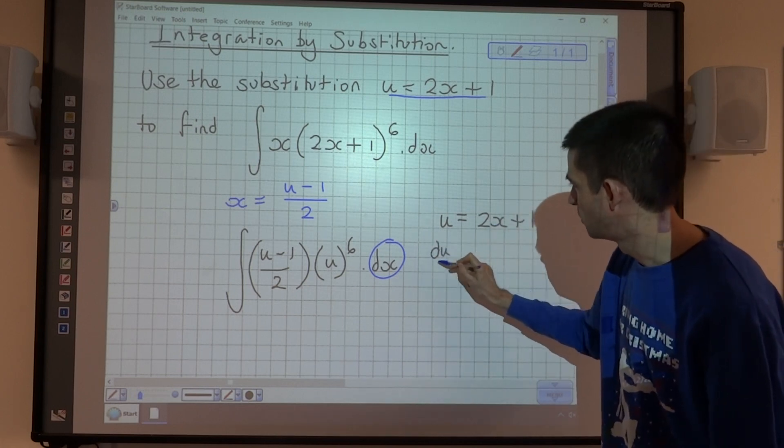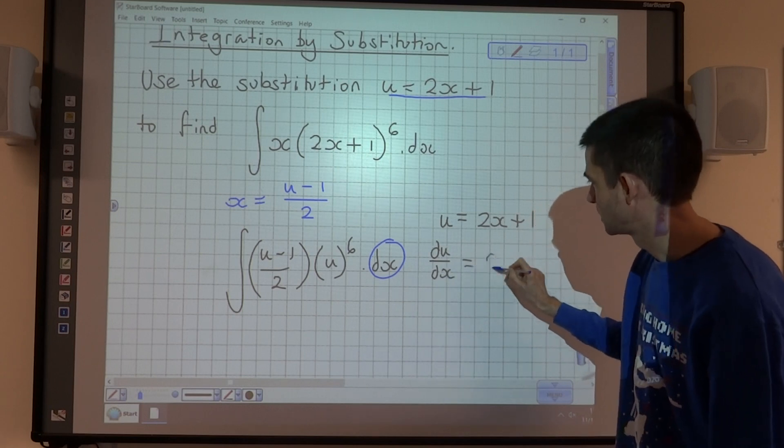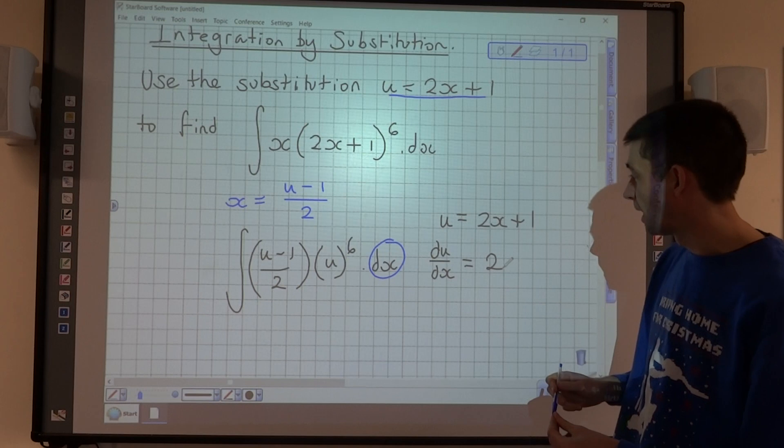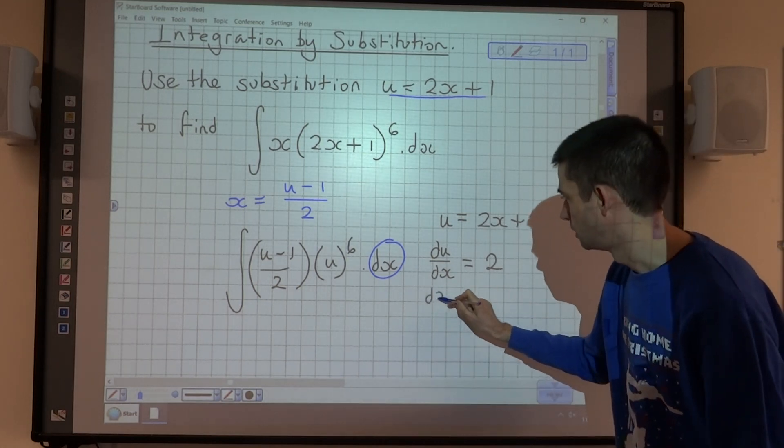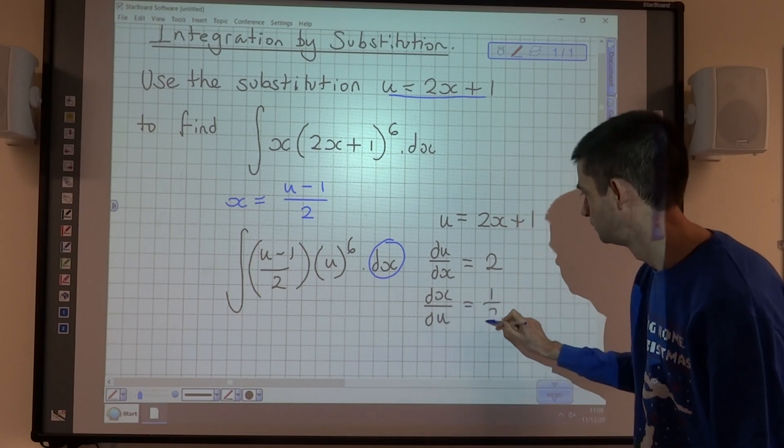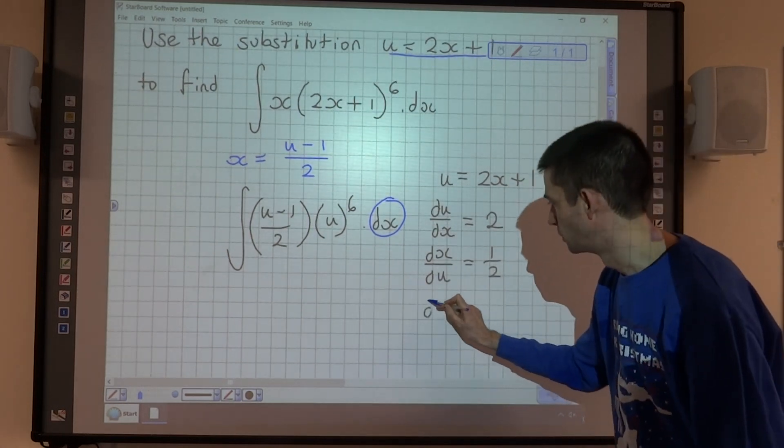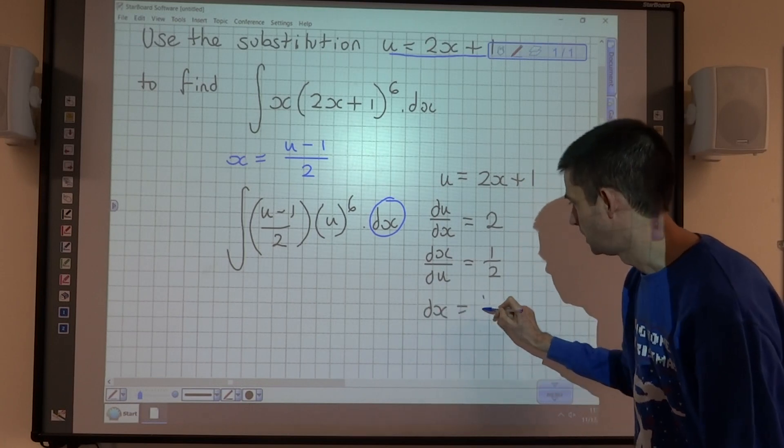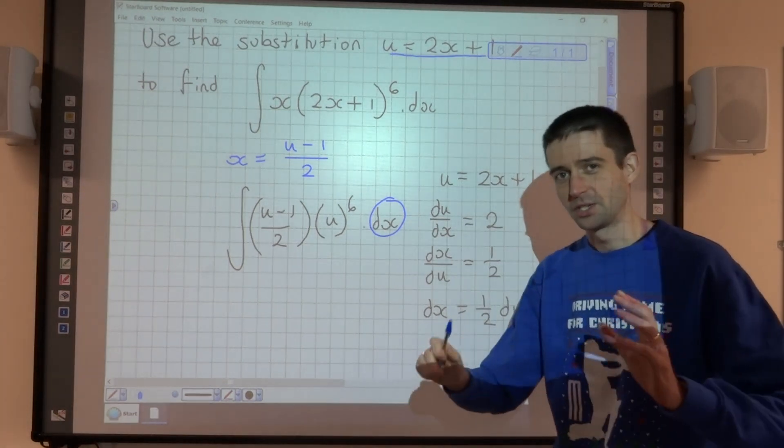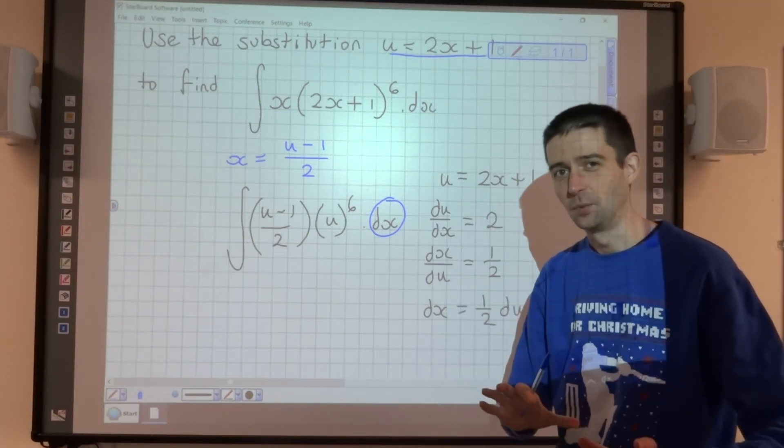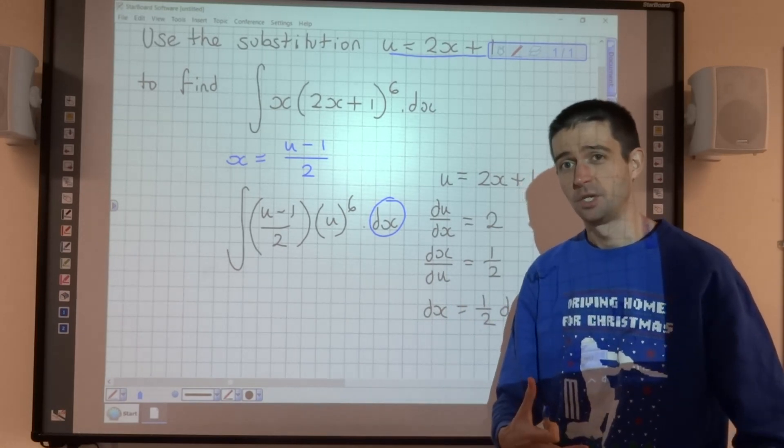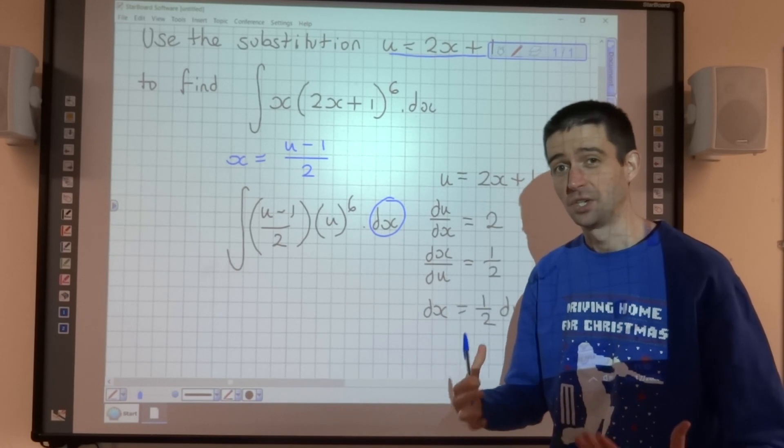And the way that we're going to do that is we're going to start with what we've got for u, which is 2x plus 1. And we're going to differentiate it to get du/dx equals 2. And what that means then is that I can write that as dx/du equals 1/2, and I can therefore write that dx is equal to 1/2 du. Now, there'll be mathematicians watching this going mad because that isn't actually what you're doing. It's fudge, but it works for the purpose of integration by substitution. So for now, we're just going to go with it.